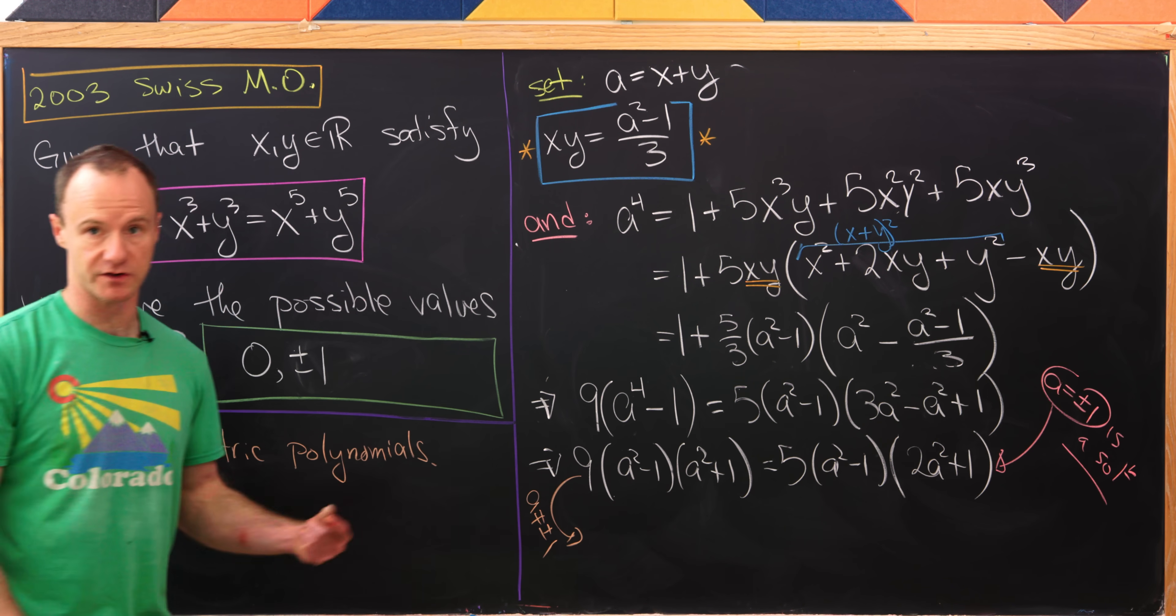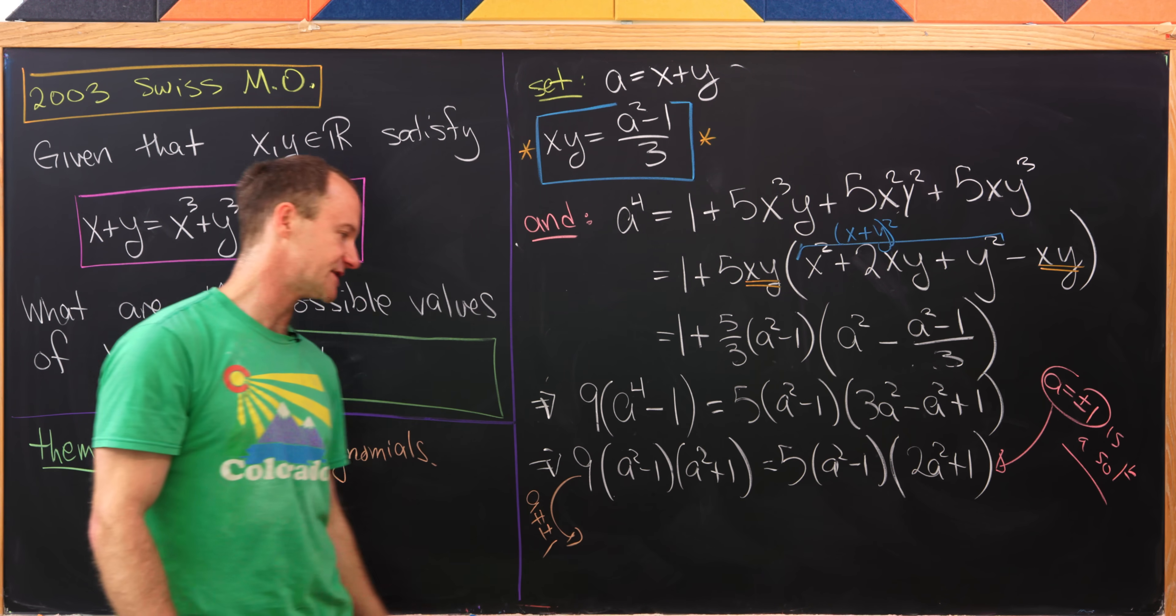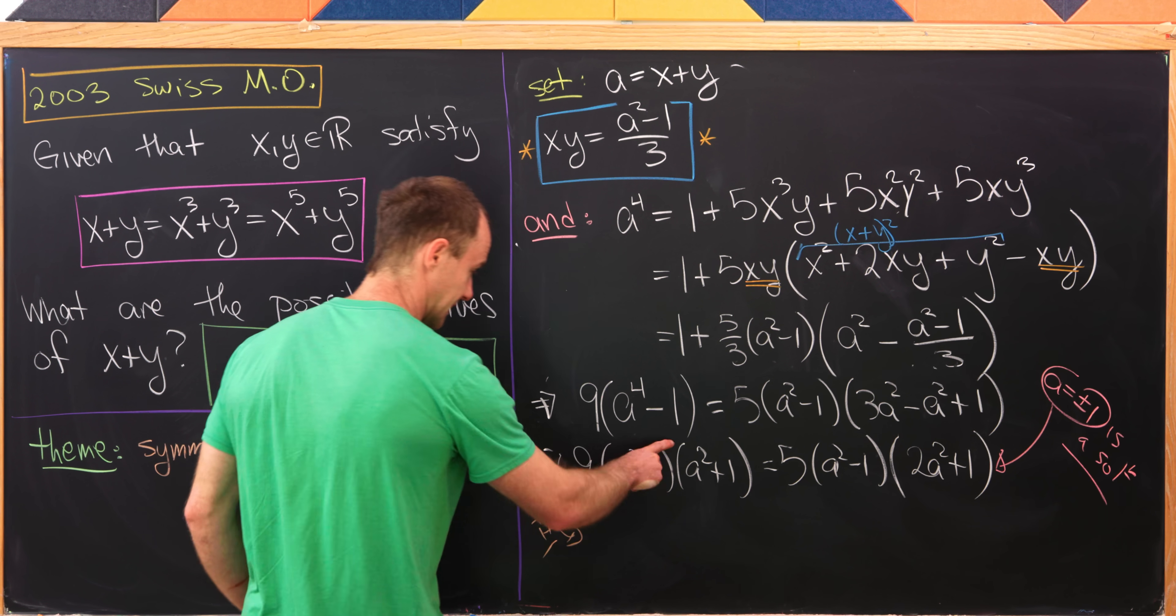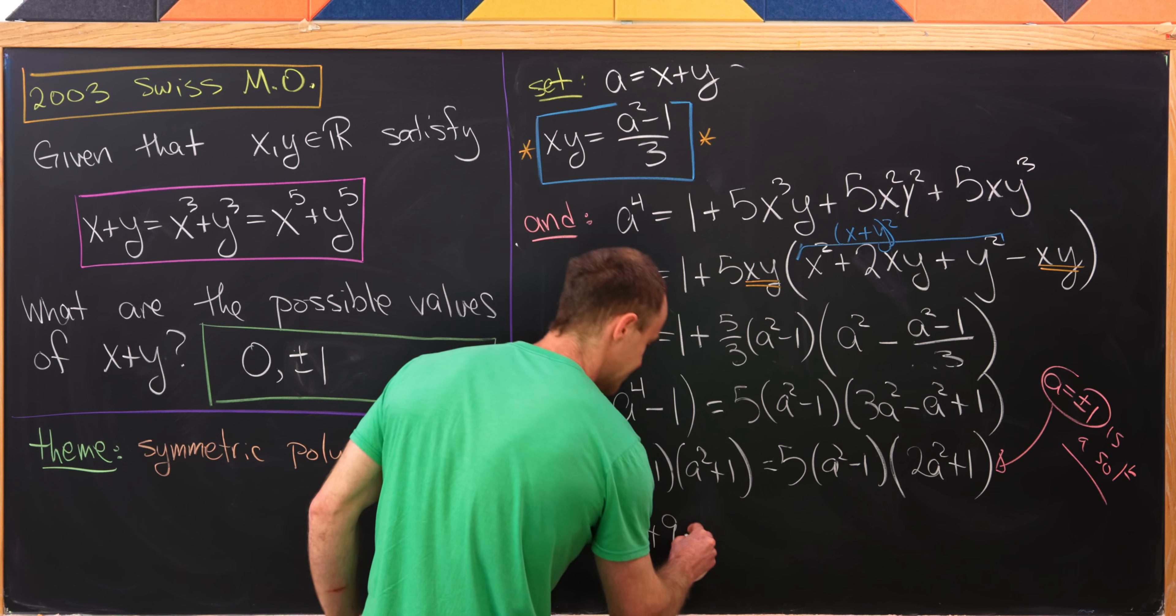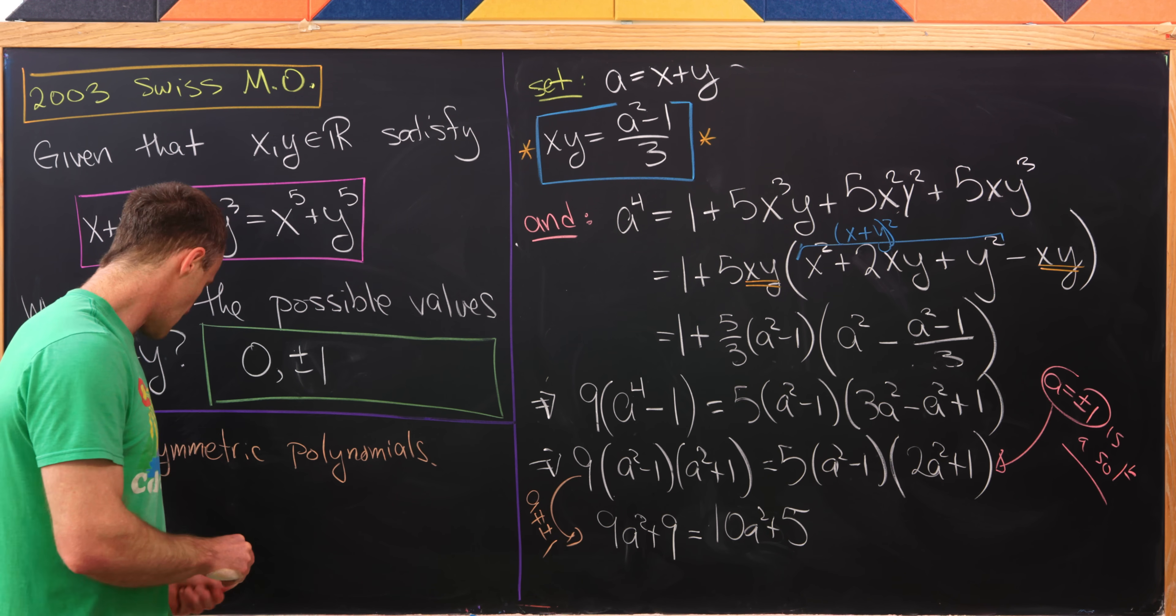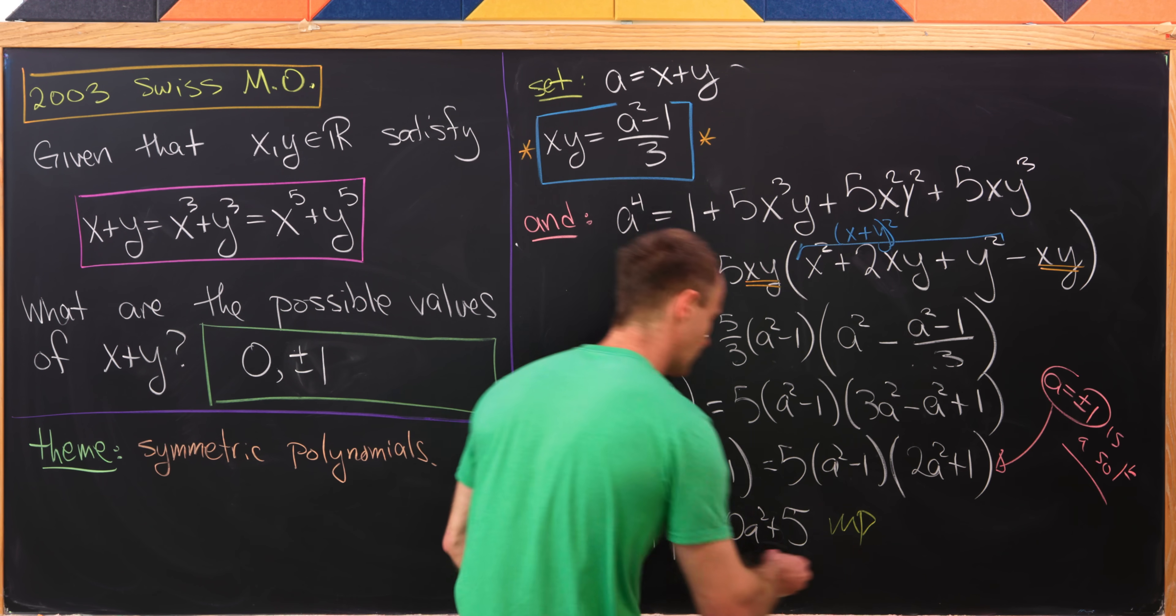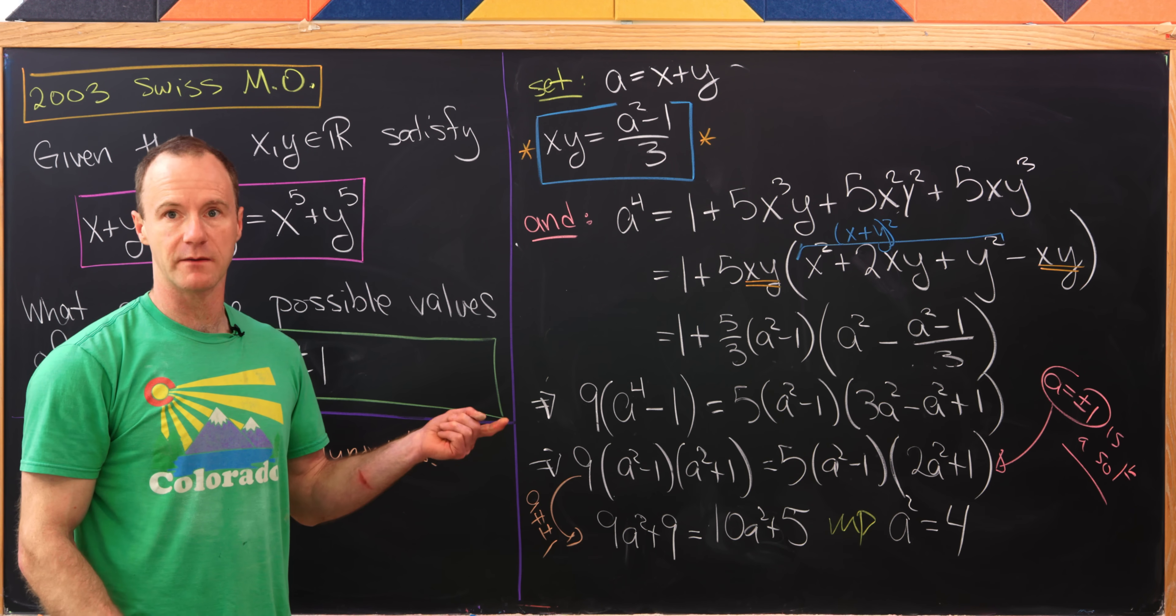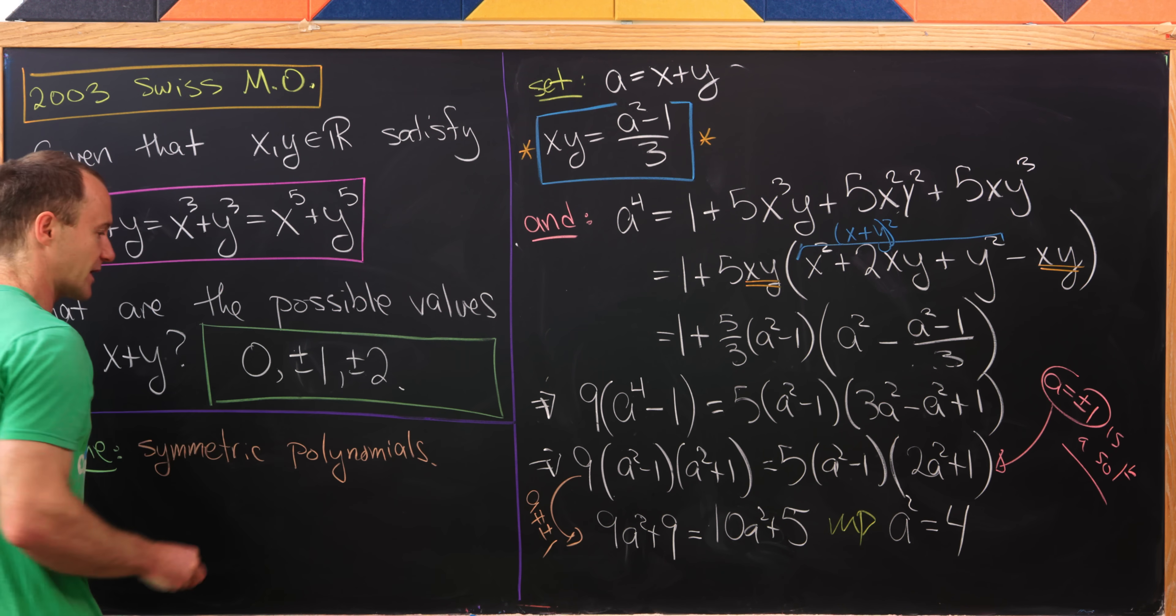But then we'll move forward with the setup if a is not equal to plus minus 1. In other words, we're going to look for other solutions. But if a is not equal to plus minus 1, that means we can divide a squared minus 1 from both sides of the equation. So that's going to cancel this out, leaving us with 9a squared plus 9 on the left. It'll cancel this out, leaving us with 10a squared plus 5 on the right. But now we're really home free. We can rearrange things and we'll be left with a squared equals 4. But if a squared equals 4, that means we have our final solution, which is a is plus minus 2.